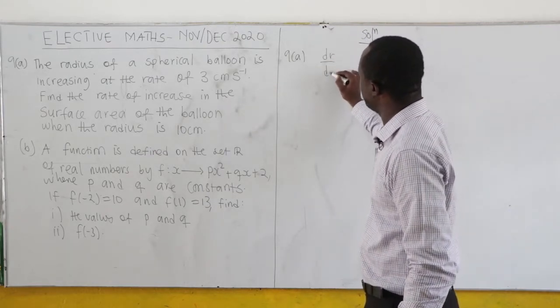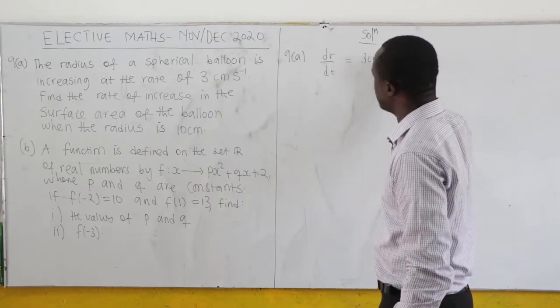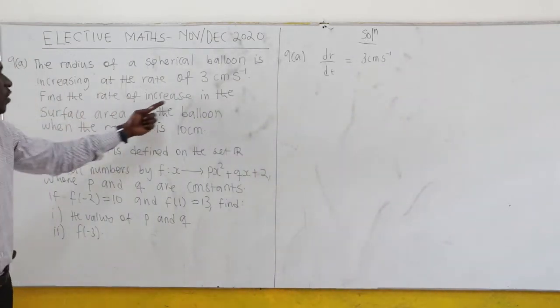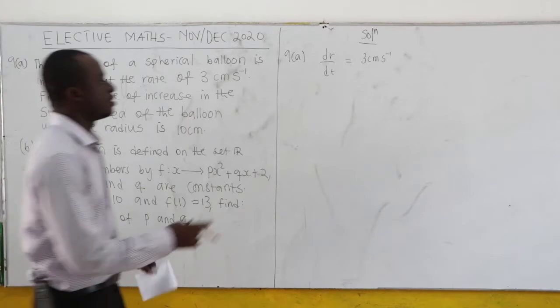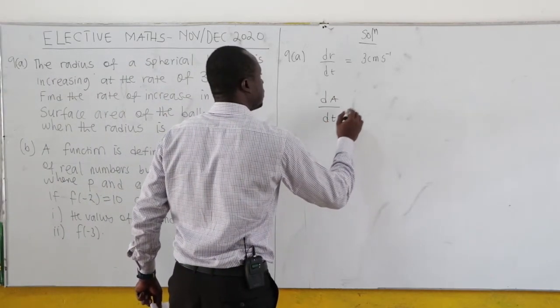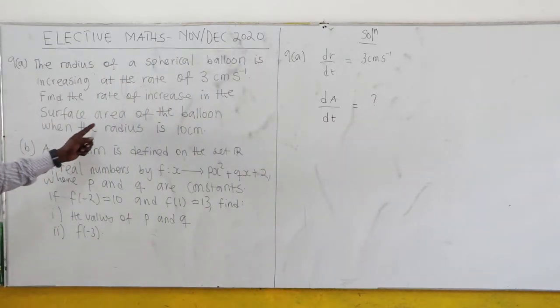So dr/dt equals 3 cm per second. We need to find the rate of increase in the surface area, dA/dt, when the radius is 10 cm.